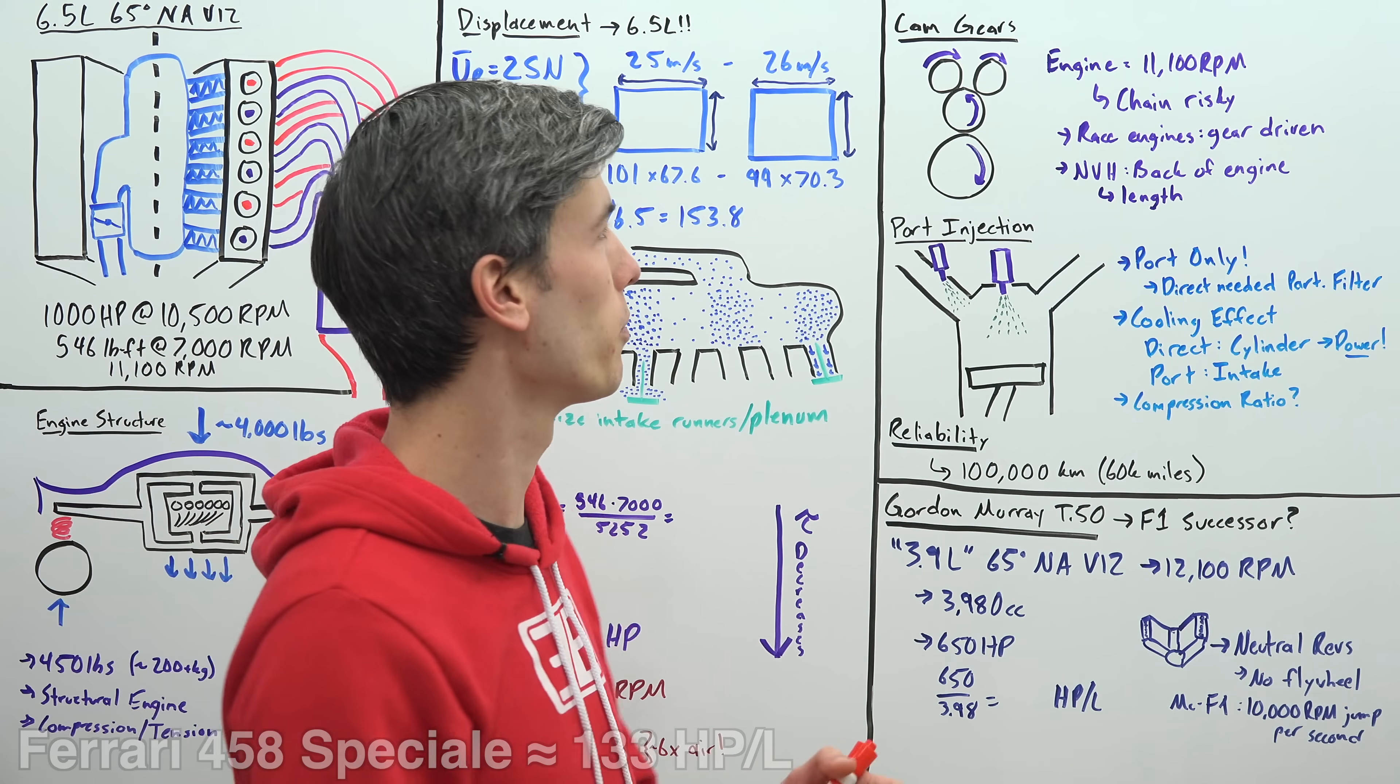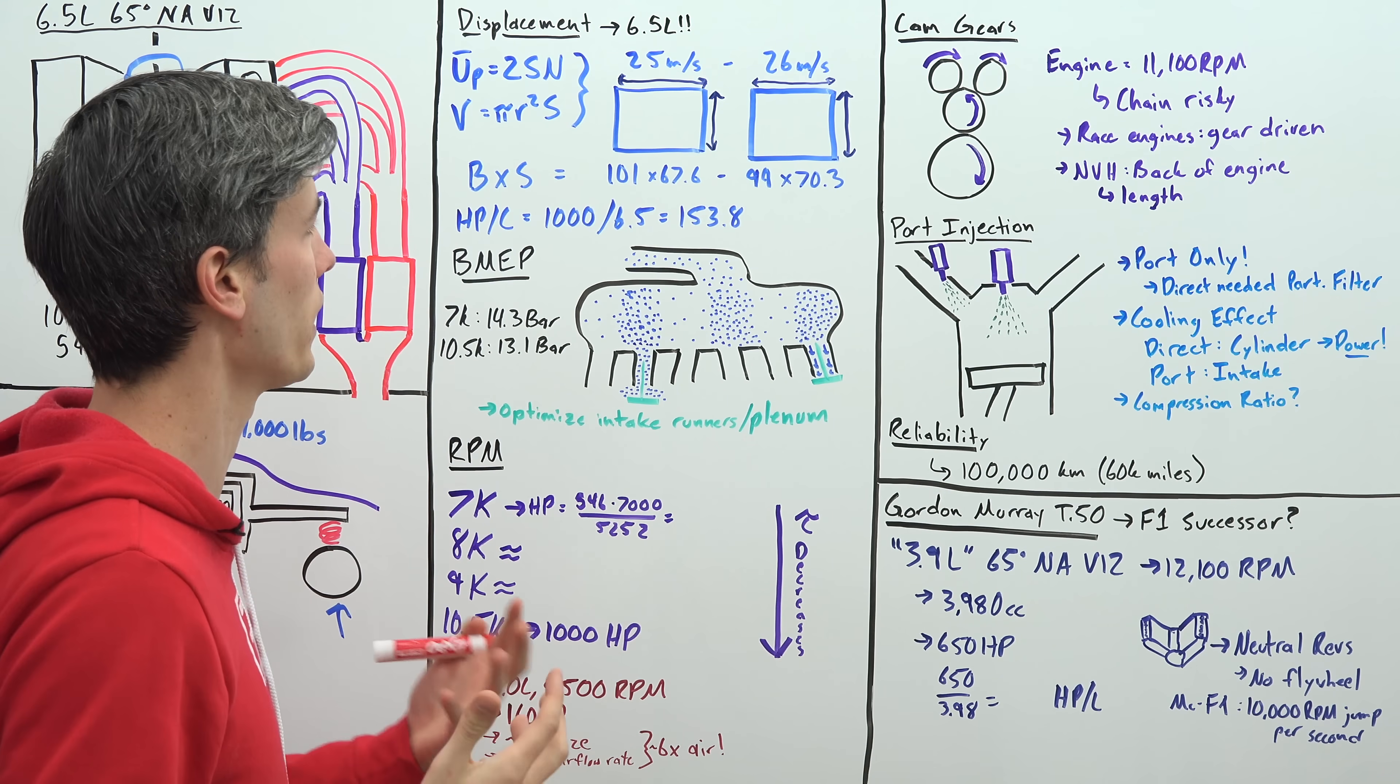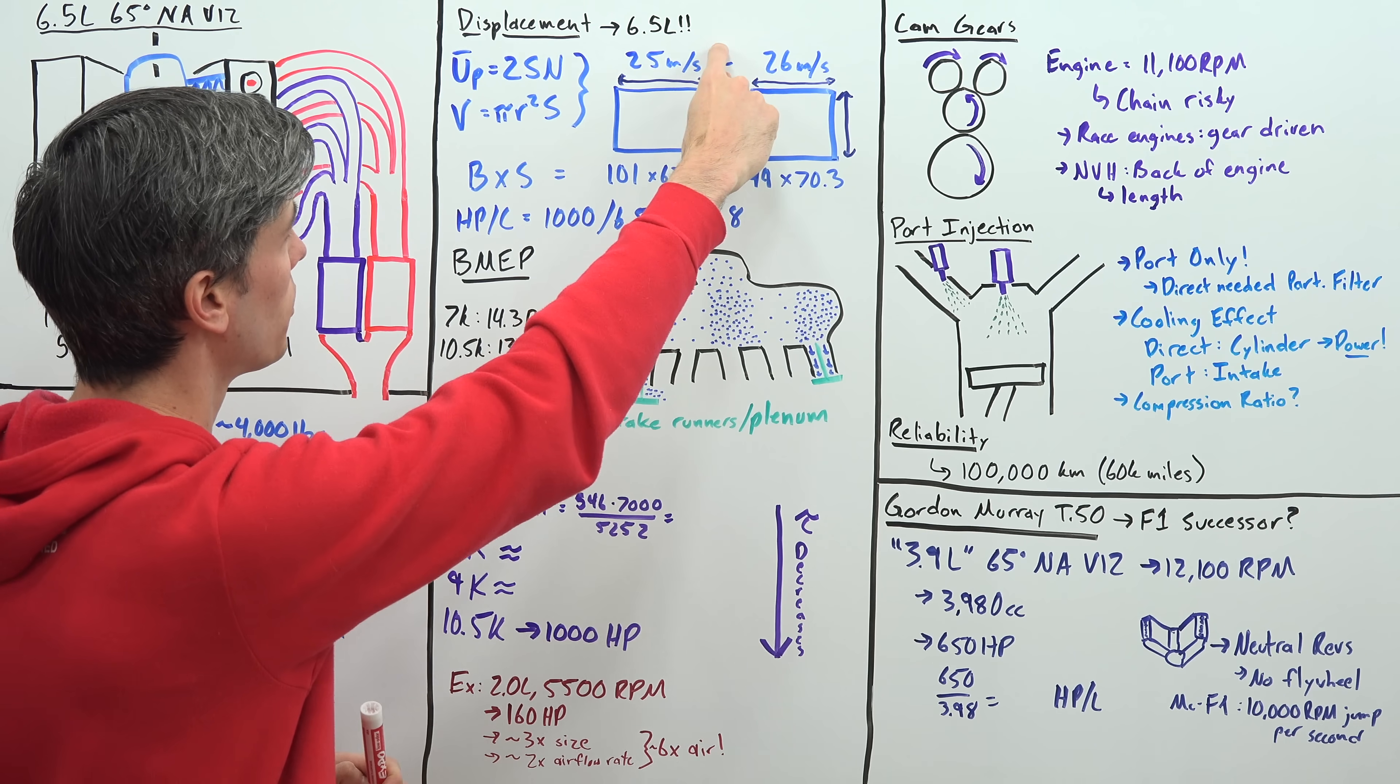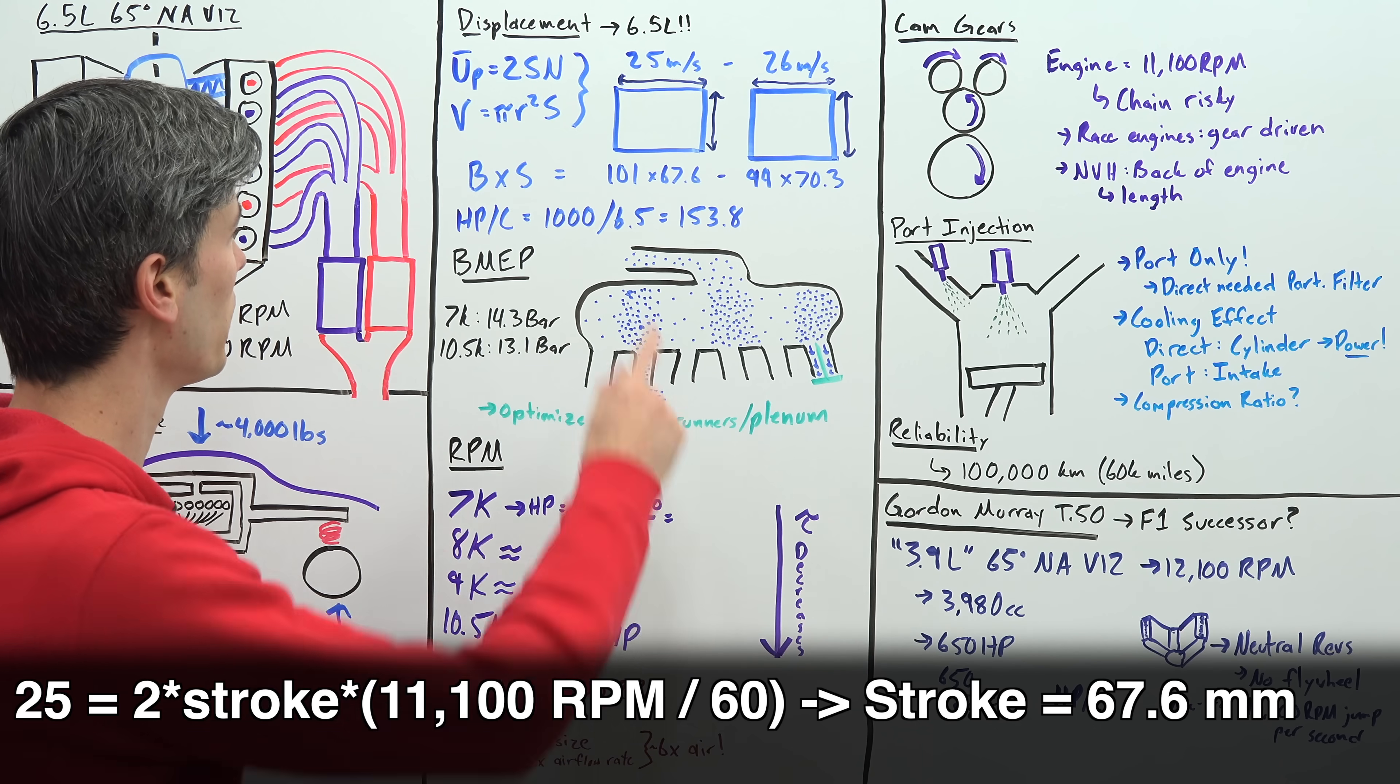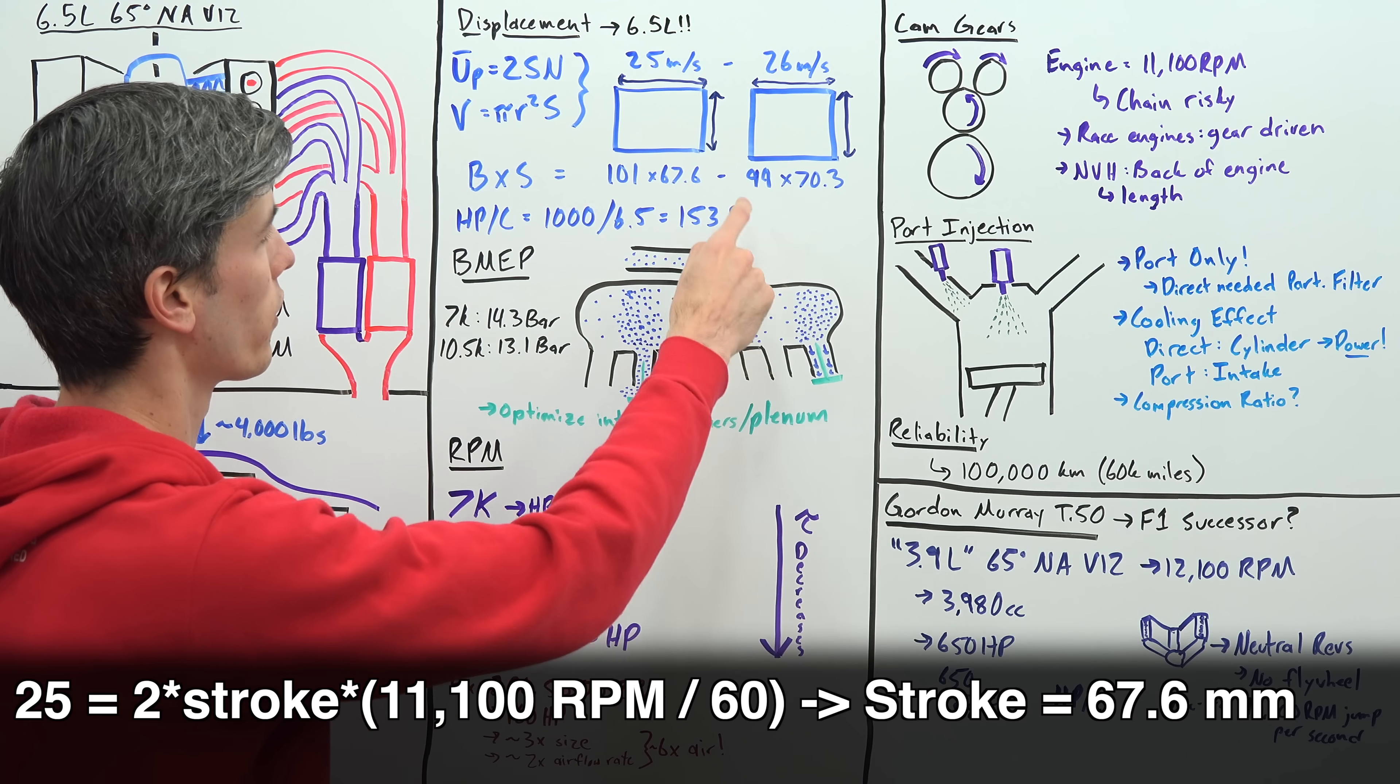Now they haven't released what the actual dimensions of these cylinders are which I was very curious about to see how fast these piston speeds were actually in there. However in an interview with Carfection Cosworth revealed that their piston speeds are somewhere between 25 and 26 meters per second, those are the average piston speeds. So we can use the simple formula for average piston speed equals two times stroke times rpm divided by 60 and that allows us to calculate what the stroke would be.